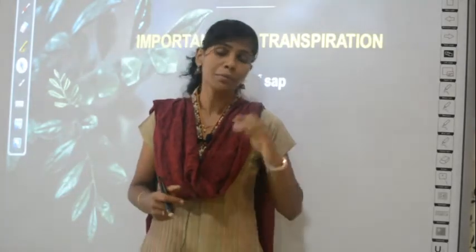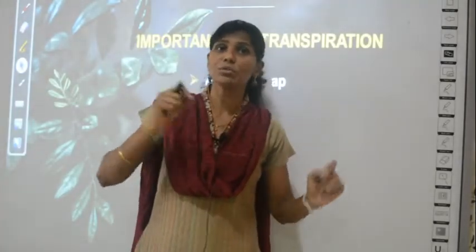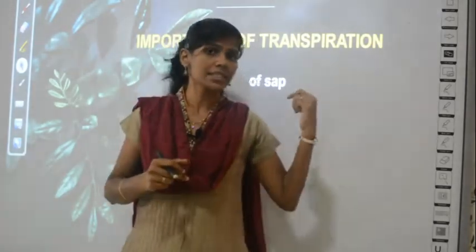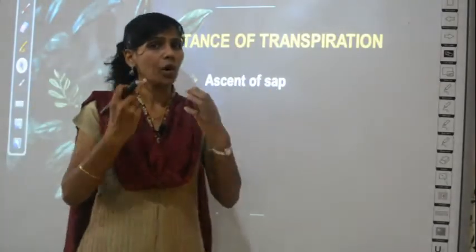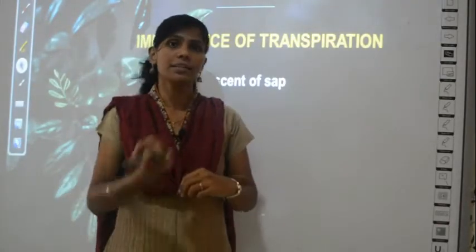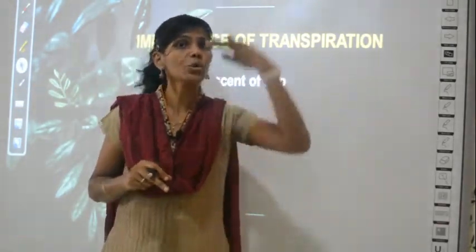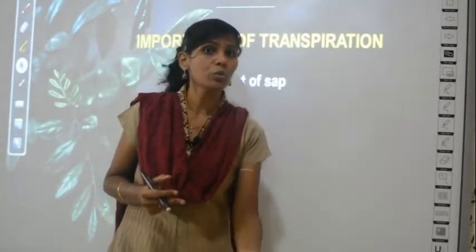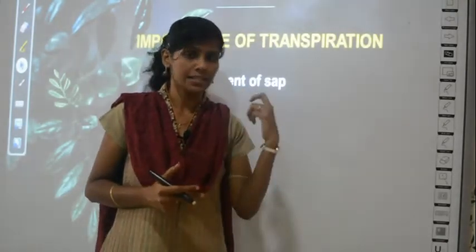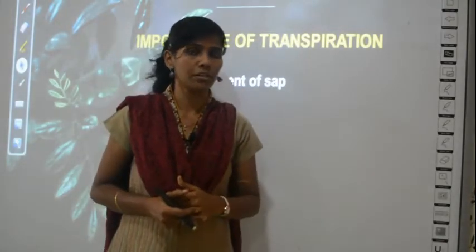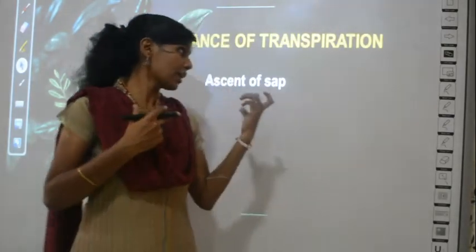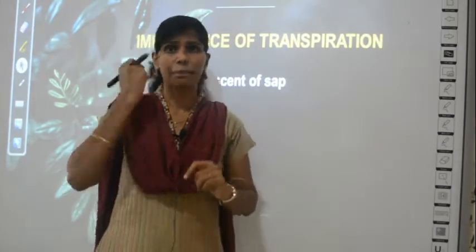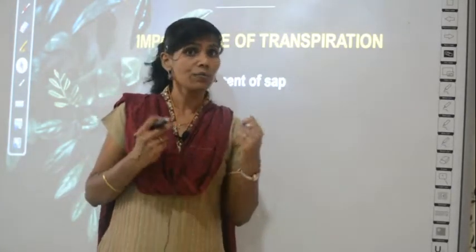What is ascent? Ascent means something increasing — like ascending numbers from low to high. Ascent of sap means water moving in the upward direction, from the lower region (the root) to the upper aerial parts. Transpiration is helpful for ascent of sap — because of transpiration, ascent of sap happens.